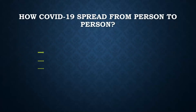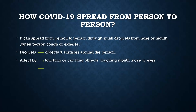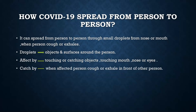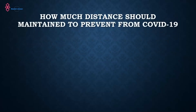How does COVID-19 spread from person to person? This is very important. It can spread through small droplets from the nose or mouth when a person coughs or exhales. The droplets land on objects or surfaces around the person, and others are affected by touching those objects and then touching their mouth, nose, or eyes, or by being near an affected person when they cough or exhale. The recommended distance to maintain for prevention is more than one meter, or three feet.